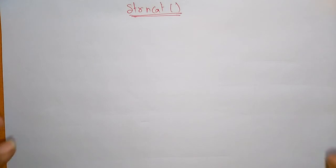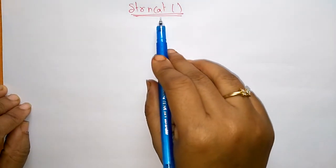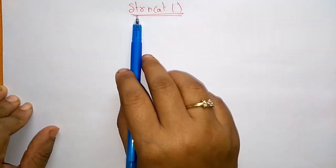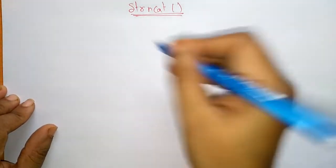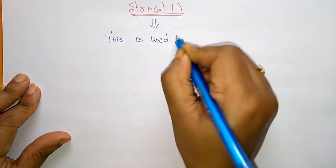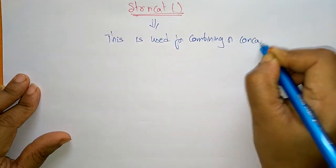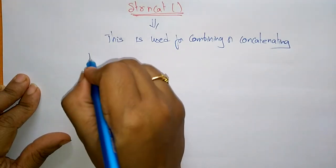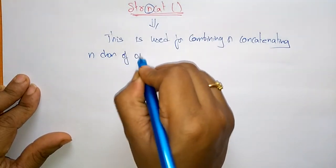Let us continue with the string library functions. We have seen different string library functions used in programs. Now coming to another library function, that is strncat. In the previous video I explained about strcat, which is used for combining or concatenating two strings, whereas strncat is used for combining or concatenating n characters.